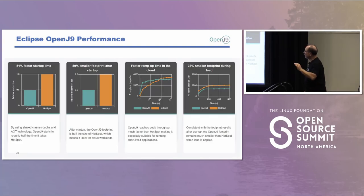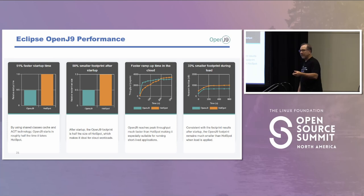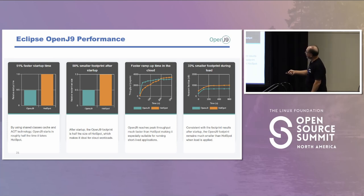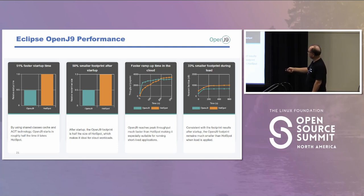OpenJ9 is built for small containers — it's built for the cloud. Here's some testing against HotSpot: it's basically half the size, ramps up faster, and uses less memory.